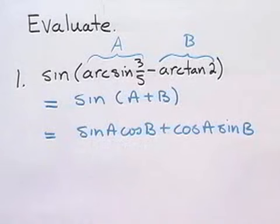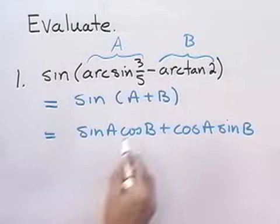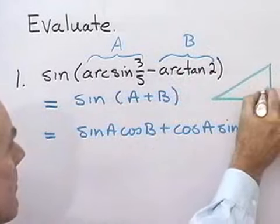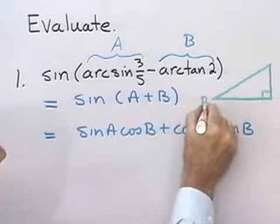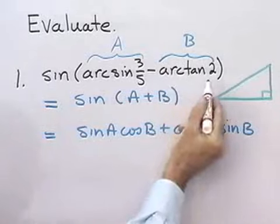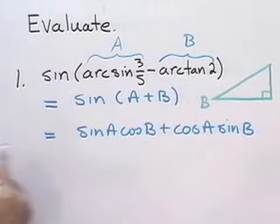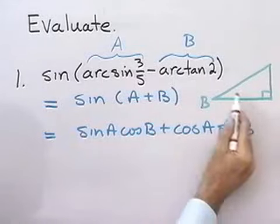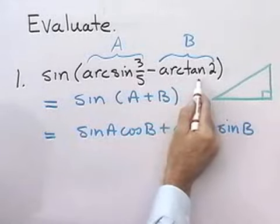So, I'm going to go back up here to my original problem, and let's look at angle B here. I'm going to draw a little right triangle. I'm going to call this angle B. And what I know about angle B is it's the angle whose tangent is 2.